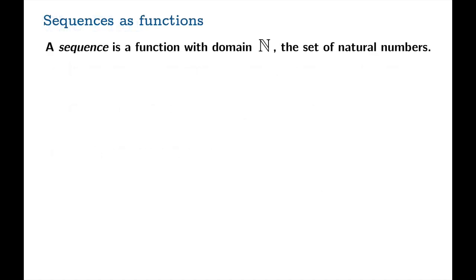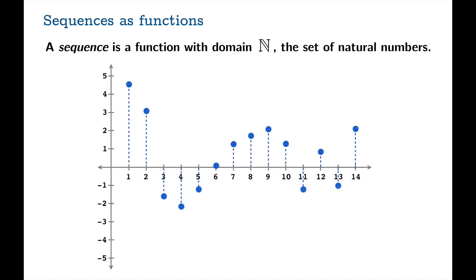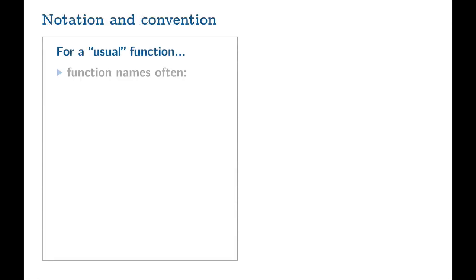So a sequence is just a function with domain N, the set of natural numbers. I mean, if your domain is just a set of natural numbers, then the graph of your sequence is just going to look like a collection of dots that are evenly spaced along the x-axis, but you still have values. So you basically get a graph of dots. That's what a sequence is.